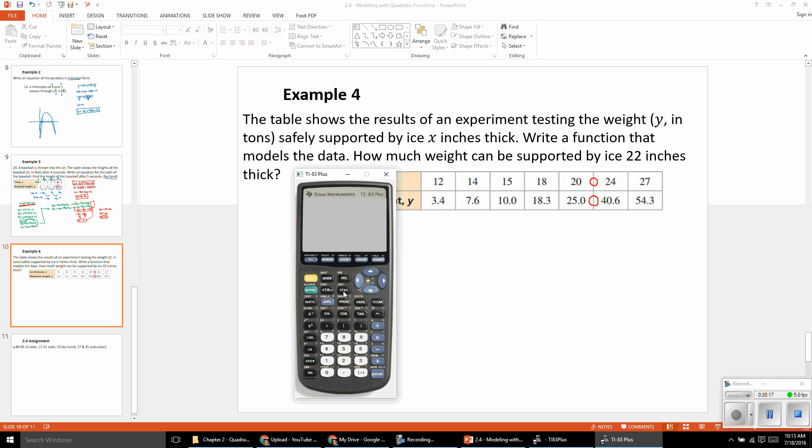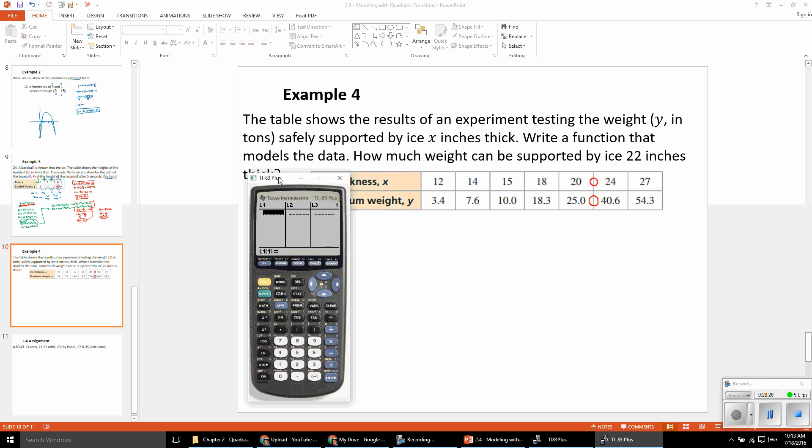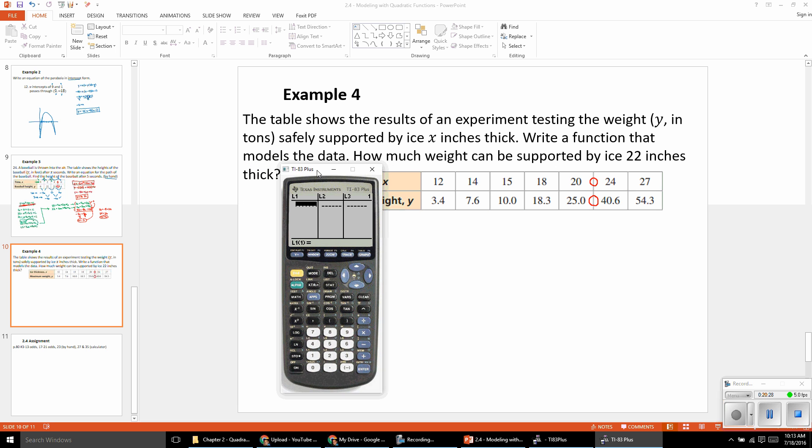So the first thing we want to do is go to the stat menu and we want to edit our data. Now, list one is going to be all of the x values, all of the ice thickness measurements. So we've got 12, we've got 14, not 44, 14. We've got 15, 18, not 48, 20, 24, and 27.